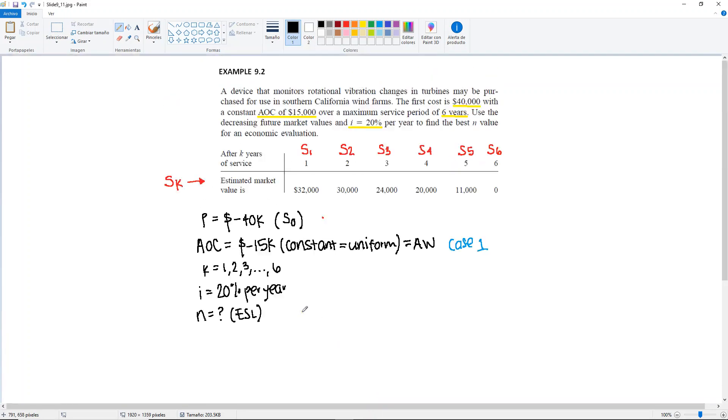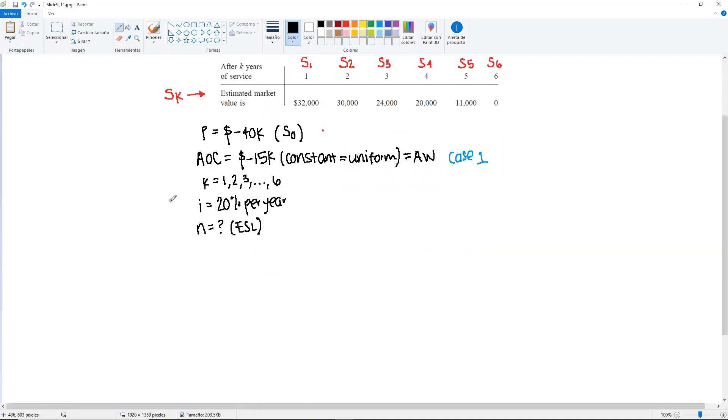So let's do for K1. Well, let me write down the formula first, the general formula for this. We're going to have the total annual worth for year K. And this is going to be the capital recovery plus, in this case, plus the AOC.